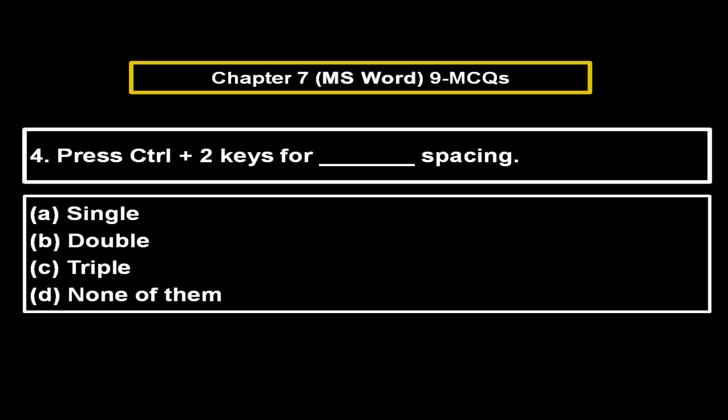Press Ctrl+2 keys for dash spacing. Option A: Single. Option B: Double. Option C: Triple. Option D: None of them. The right answer is Option B — Double.